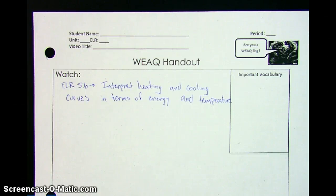Hello students, you're watching this video about ELR 5.6. This ELR is all about interpreting heating and cooling curves in terms of energy and temperature. In order to be prepared for this note sheet, you're probably going to want several different colors. Please remember that you can stop and rewind anytime you need to in case I'm going too fast.